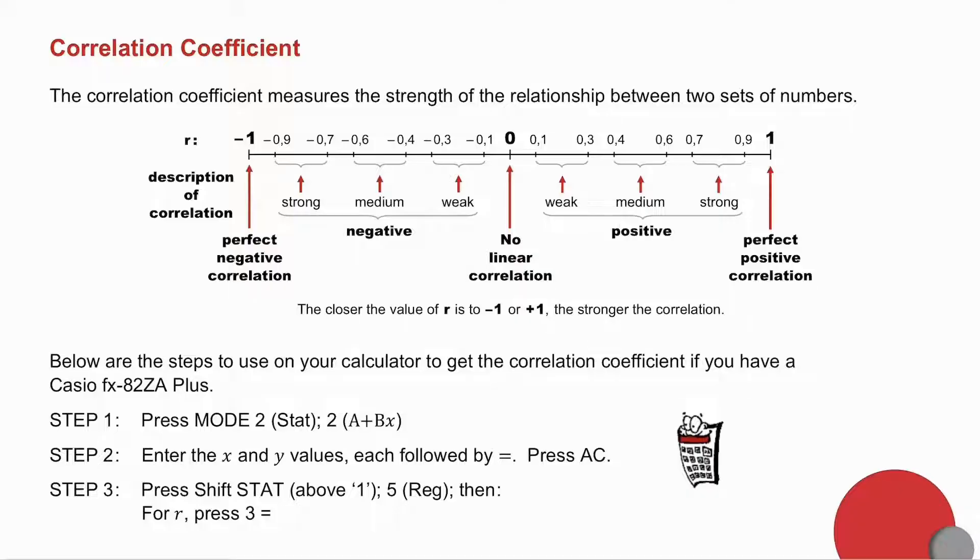When they ask you to comment on the correlation coefficient, you need to comment on the strength, so weak, medium, or strong, as well as whether it is negative or positive.